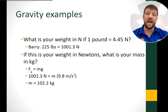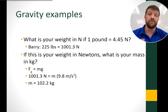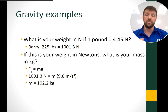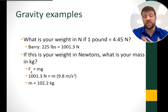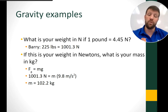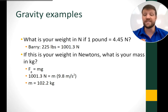Quick example: one pound equals 4.45 Newtons. At 225 pounds, that's just over 1,000 Newtons. Using F_G = mg, solving for mass gives just over 100 kilograms. Pause and try finding your own mass in kilograms.